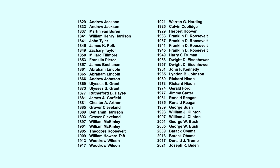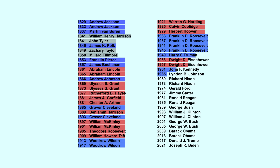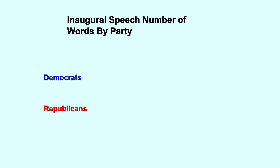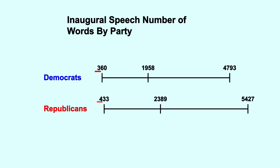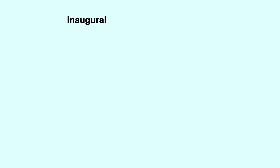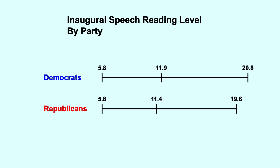Can you find any differences across political parties? Yes, but the results were not what I expected. If we group all presidential inaugural speeches in the last two centuries by political party, we can see if Democrats or Republicans score differently. First, let's just take a look at speech length. If we look at the shortest and longest speeches of Democrats and Republicans, we can see that Republican speeches are a bit longer. The average Democrat speech is about 1,900 words long, and the average Republican speech is nearly 2,400 words long.